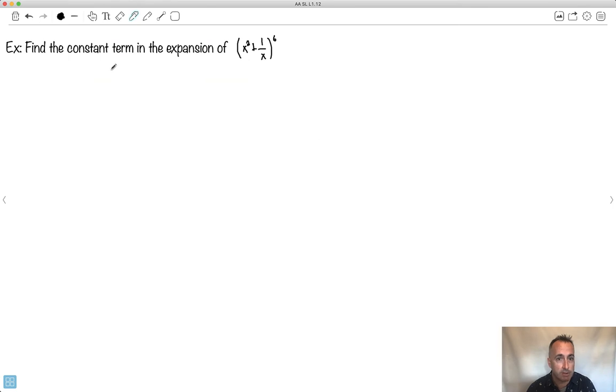This is one from an IB question, actually. So find the constant term in the expansion of x squared plus one over x to the sixth. I didn't make it too hard. It's medium difficulty, right? Because it's to the power of six. It's not that crazy. But I don't want to do it using Pascal's Triangle method. I'm going to do it using this hybrid. So first I'm going to write out all of my different terms.